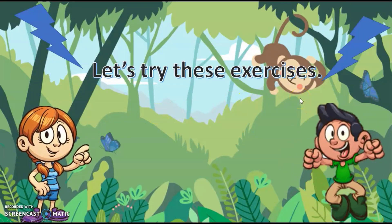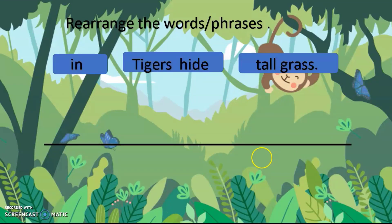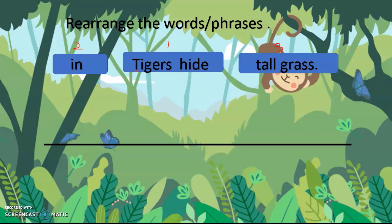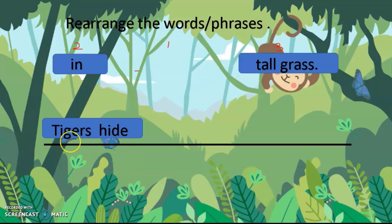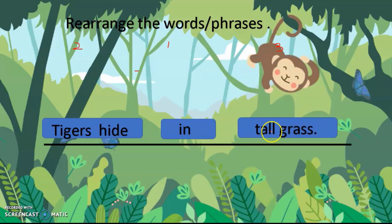Let's try these exercises. Now let's do this exercise — rearrange the words or phrases. In 'tigers hide in tall grass,' which should be the first word or first phrase? Look for the word that begins with a capital letter. So 'tigers hide' should be number one. Where do tigers hide? Tigers hide in tall grass.